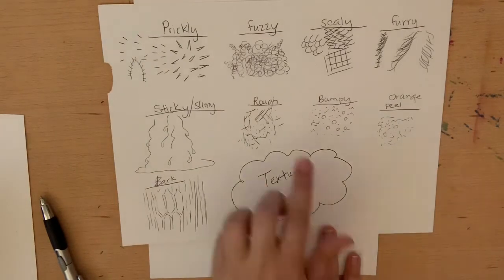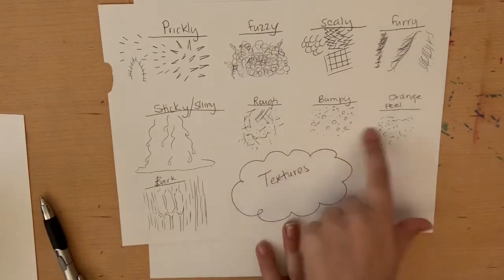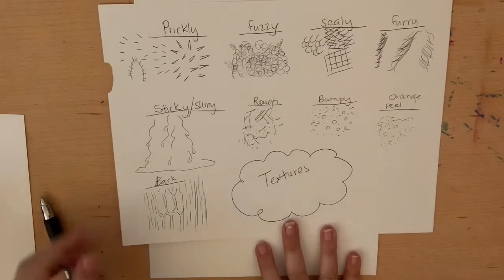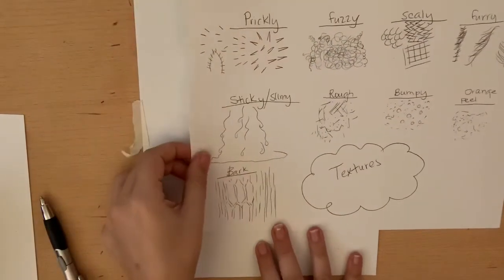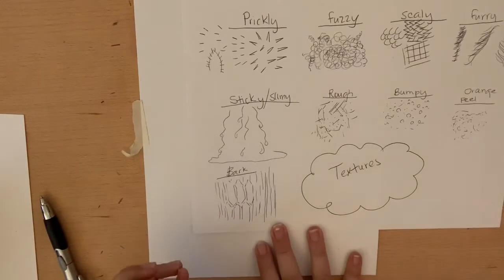Bumpy. Bumpy is similar to rough, but bumpy's got some bumps. Orange peel. Orange peel is like in between all three of these. That's why I gave it its own mark. Because I had to really look at an orange and I had to really think about it. And the next thing is like bark. Different trees have different types of bark and they make a different type of texture. So go out and look at a tree. Go out and look at a rock.